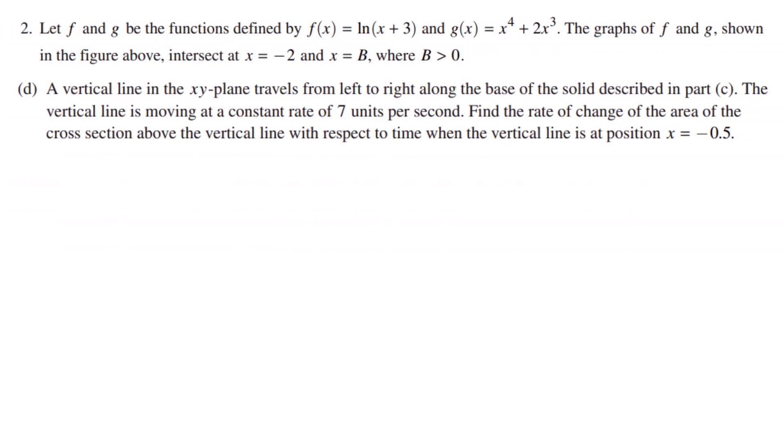Alright, part d. A vertical line in the xy plane travels from left to right along the base of the solid described in part c. The vertical line is moving at a constant rate of 7 units per second. Find the rate of change of the area of the cross section above the vertical line with respect to time when the vertical line is at position x equals -0.5.